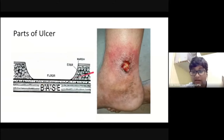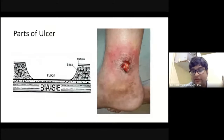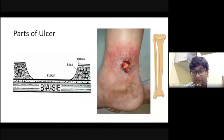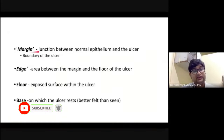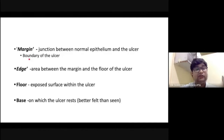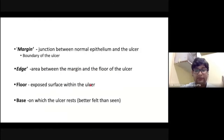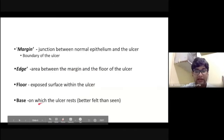For the base, you must feel it. You can see the floor here, but you are not able to see the base, which is actually the bone — the medial malleolar part of the tibia. So the base is not visible; what you see is the floor of the ulcer. In written terms: the margin is the junction between the normal epithelium and the ulcer, also known as the boundary. The edge is the area between the margin and the floor. The floor is the exposed surface, and the base is what the ulcer rests on — better felt than seen.